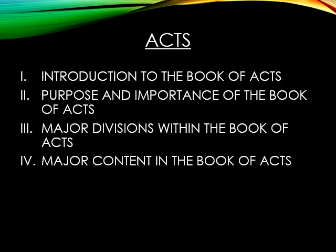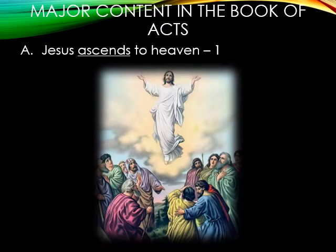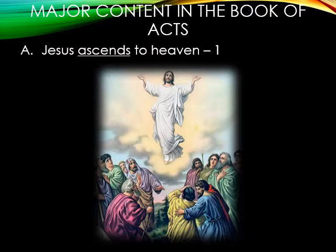Now that we looked at the major divisions, let's look at some major content in the Book of Acts. Letter A: in Acts chapter 1, Jesus ascends to heaven. While standing with the disciples on the Mount of Olives, Jesus instructs them that the Holy Spirit would come and baptize them. He then ascends into heaven, and two angels tell the disciples that Jesus will return the same way he left. Luke also records that Jesus stayed on earth 40 days after his resurrection before he ascended to the Father.